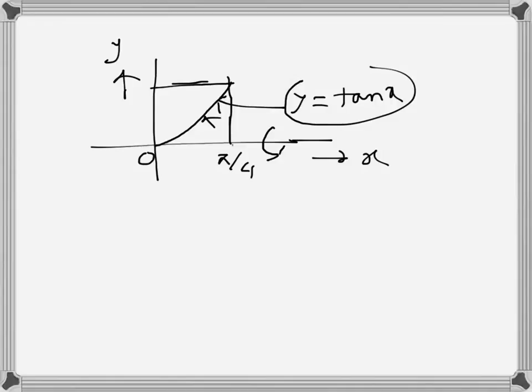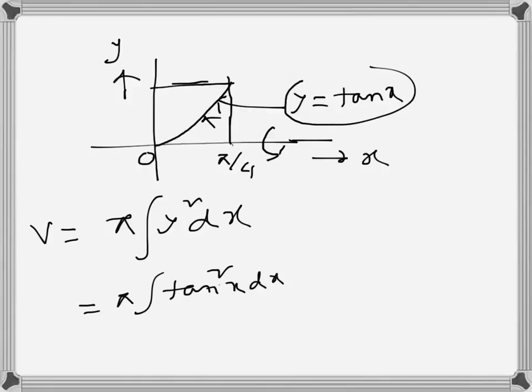We know from the formula that the volume generated when a function is rotated about the x-axis is given by this formula. So y squared is tan²x dx, and this we can write as sec²x minus 1 dx, from the identity 1 plus tan²x equals sec²x.